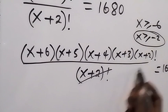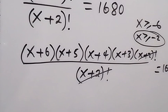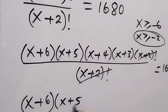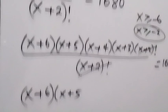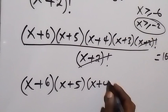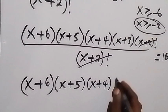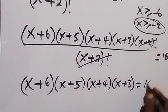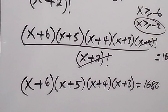After cancellation, what we have left is (x+6)(x+5)(x+4)(x+3) equals 1680.